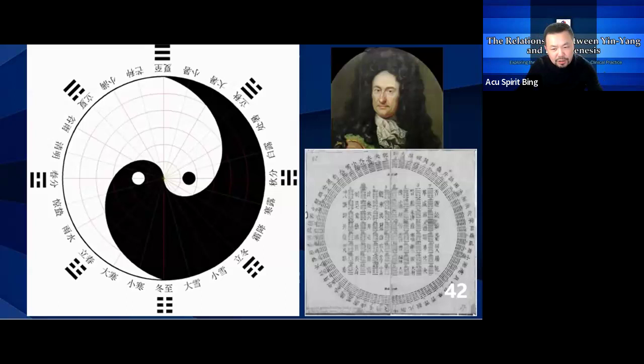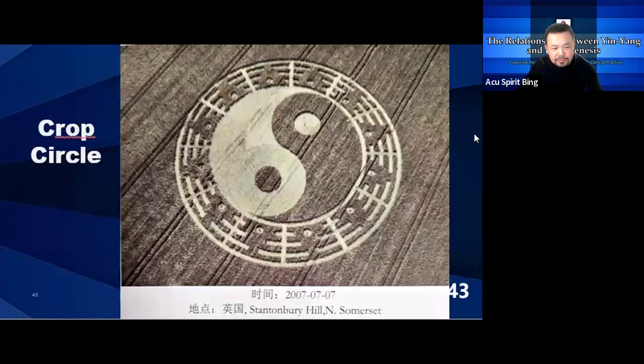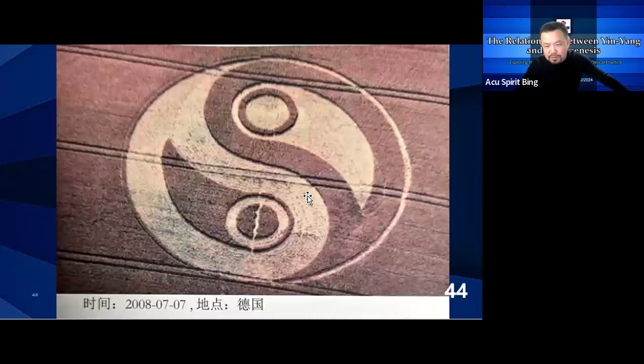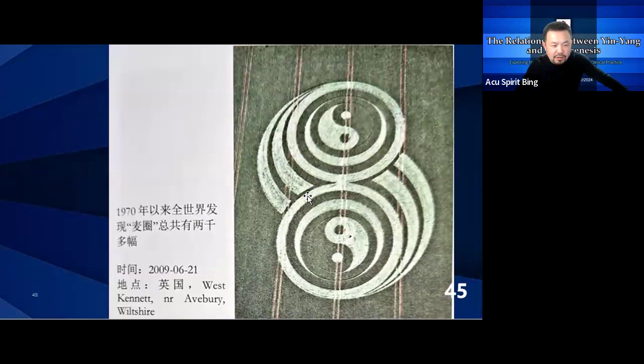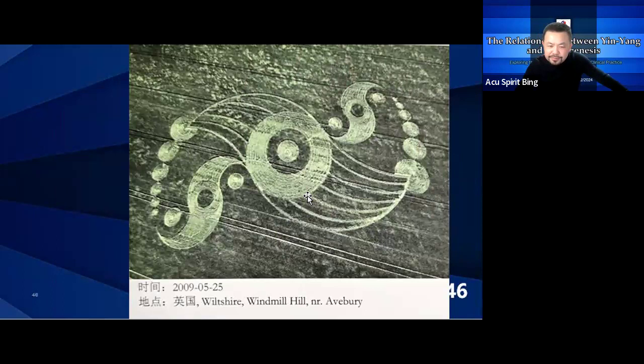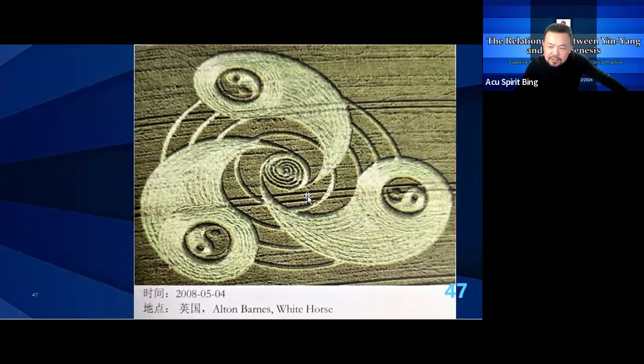Not only do Chinese people have a fondness for drawing Tai Chi symbols, but British people have also had a long history of doing so. This is the Tai Chi crop circle discovered in the Somerset region of England in 2007. This is from Germany. This is from the UK again in 2009. These Tai Chi symbols are drawn very delicately — the question is we don't know how they were drawn or what significance they represent.